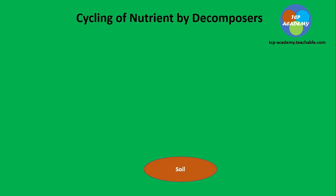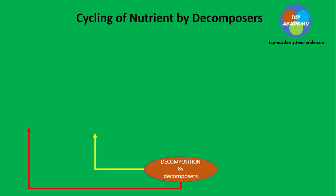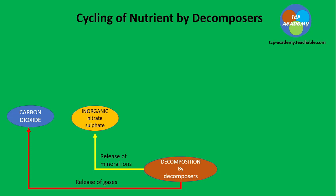Now we're going to look at how this process works. Here we have some soil with the remains of a plant and the remains of an animal, buried in or on the soil. The next step involves our vegetivores acting on it, after which the decomposition process begins where decomposers act on the organic remains. They release mineral ions and gases, including carbon dioxide produced through respiration, which is then used in the process of photosynthesis.